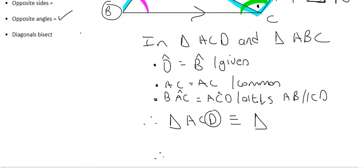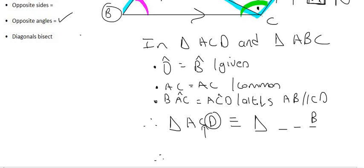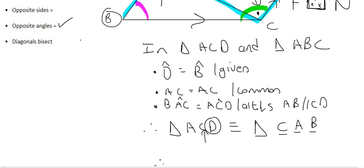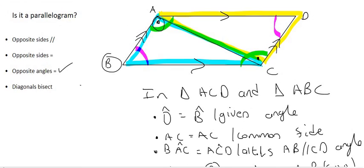Therefore, triangle ACD is congruent to triangle CBD using side-angle-angle. We know D matches B, angle A matches angle C, and then the remaining letters follow. From this congruency, we can extract that this length is exactly the same as that length, and this length over here is exactly the same as this length over here.